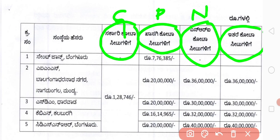For SDM, the private seat is 20 lakhs, NRI is 30 lakhs, and management seat is also 30 lakhs. For KBN Kalaburagi, the private seat is 16,14,965, and both NRI and management seats are 32 lakhs. For CD SN ER Bangalore, the private seat is 20 lakhs, NRI is 40 lakhs, and management seat is also 40 lakhs per annum.